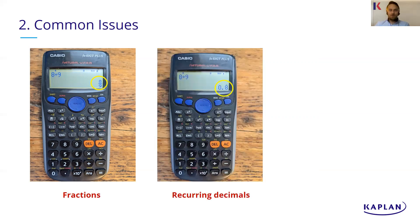What you can do is press the little s to d button which is just above that delete key, the orange delete key on your calculator. There's that s to d button and that switches it.